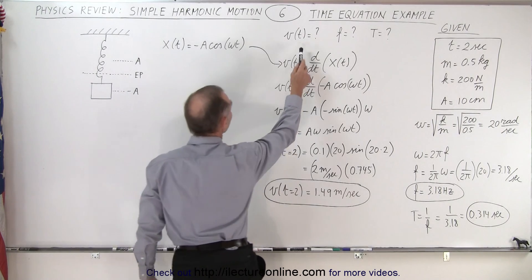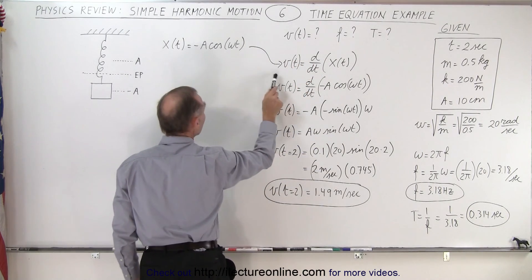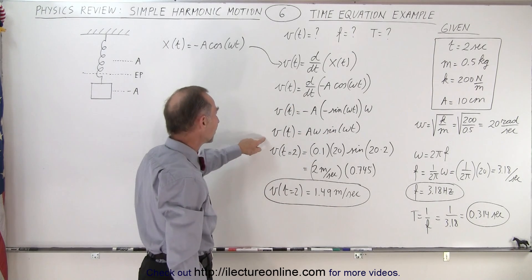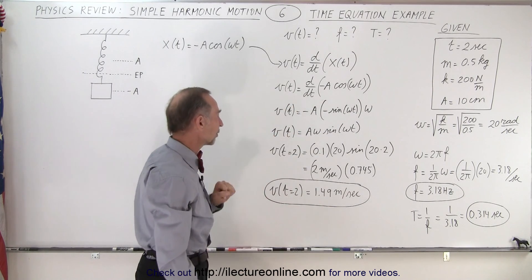So to find the velocity as a function of time, we need to take our equation, take the derivative of that equation to find the velocity. After we take the derivative, we find that the velocity is equal to this equation right here.